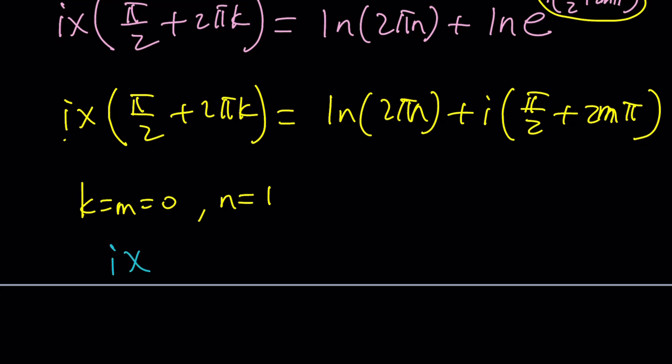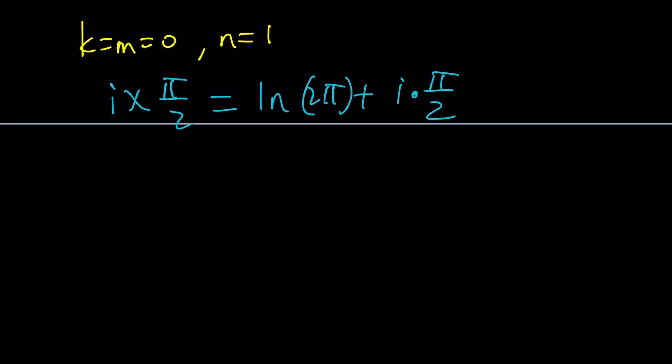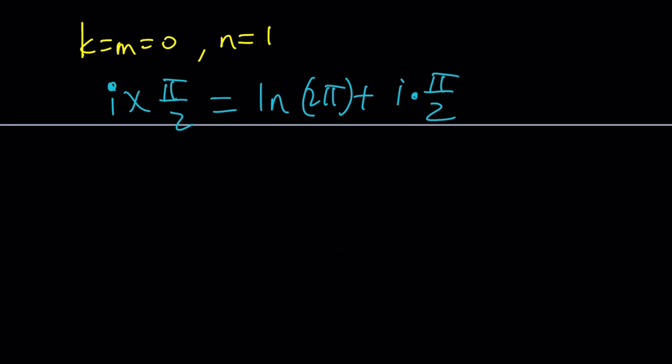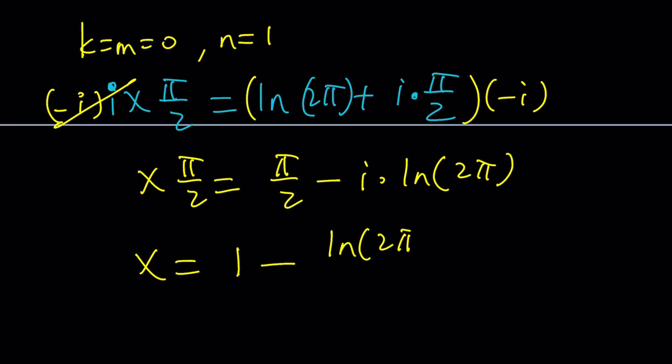So that's going to give us something much simpler. At least it's going to look nicer. We're going to get ix pi over 2 equals ln 2 pi plus i times pi over 2. You see how nice that is? Let's just focus on this. So we're going to go ahead and first take care of the i. I'd probably just multiply both sides by negative i because that will get rid of the i. i times negative i is 1. So we can forget about it. And then divide both sides by pi over 2.